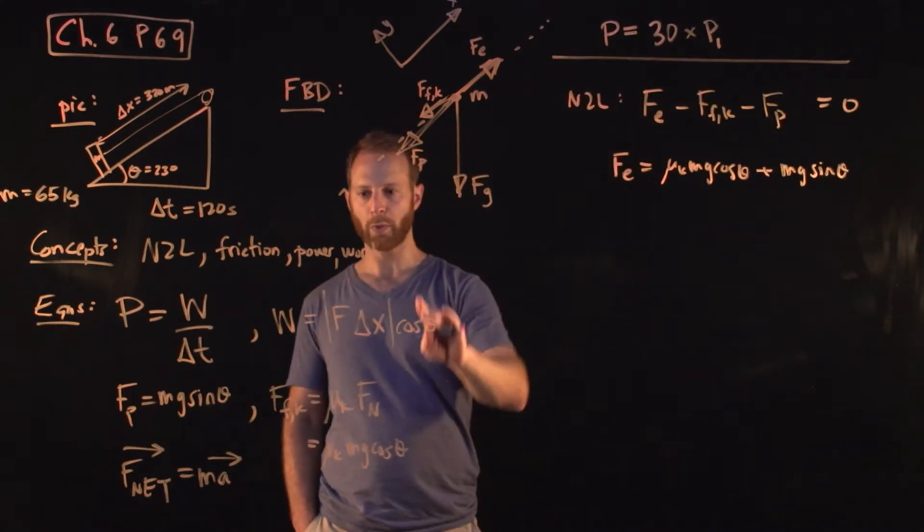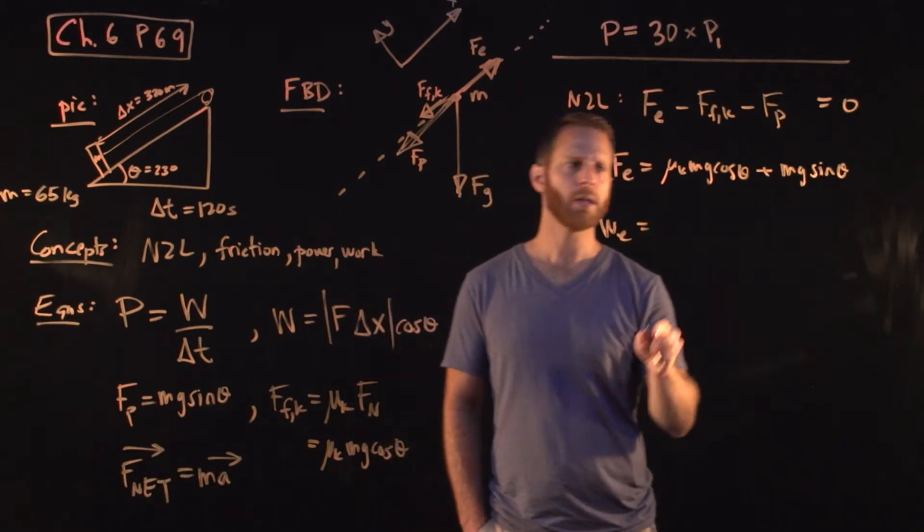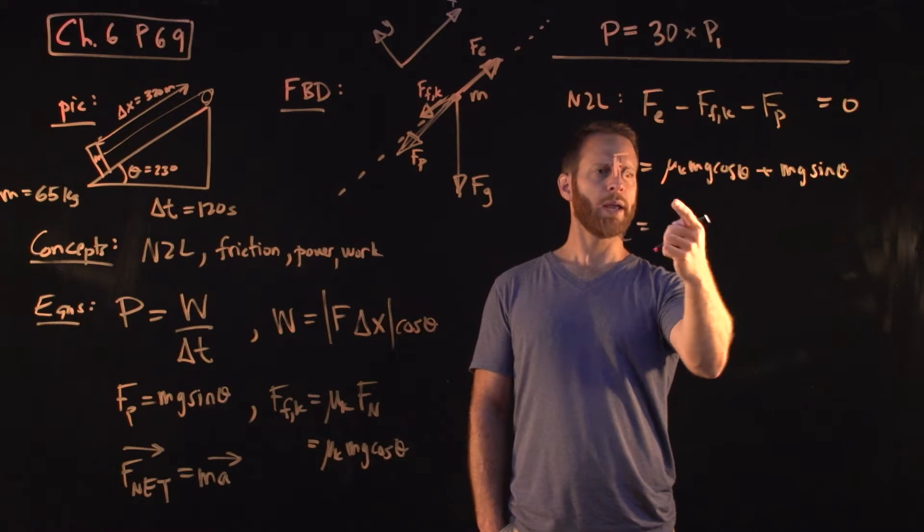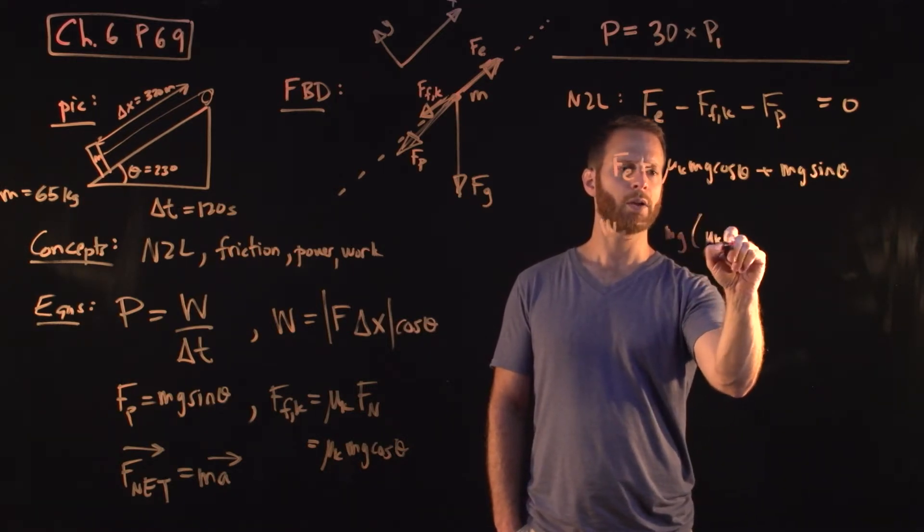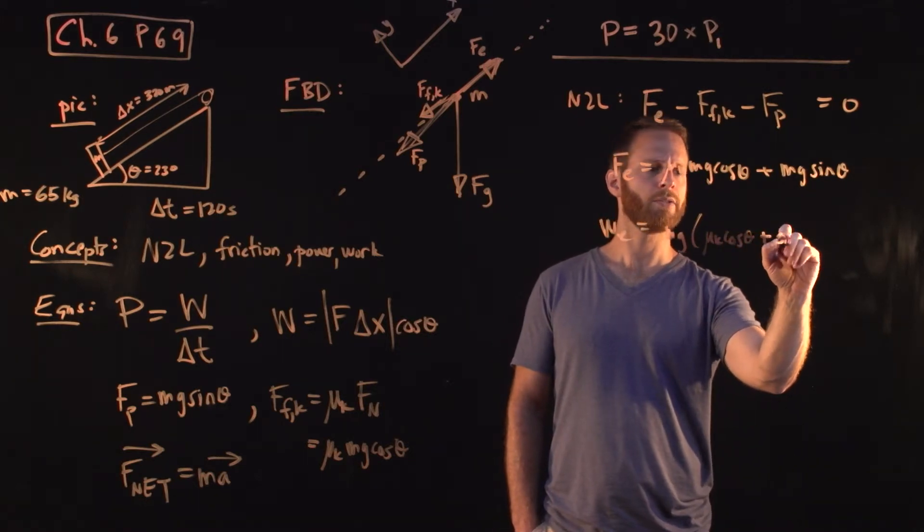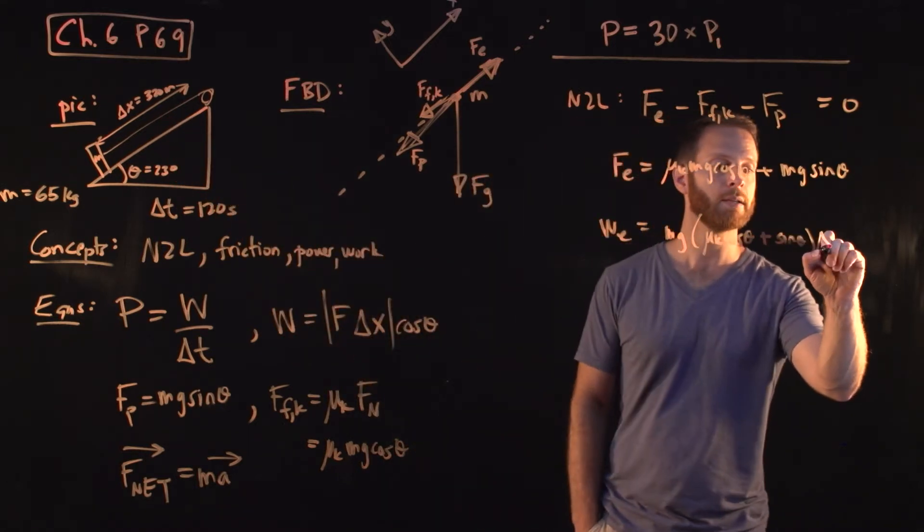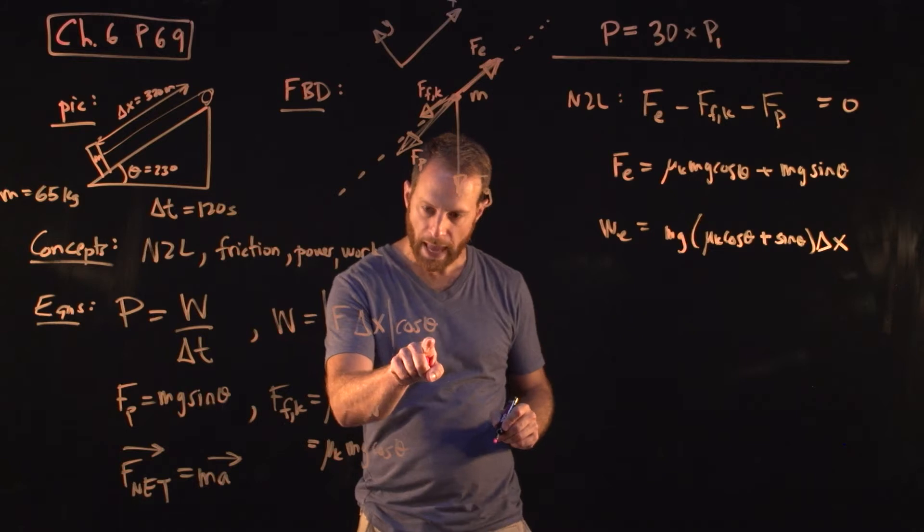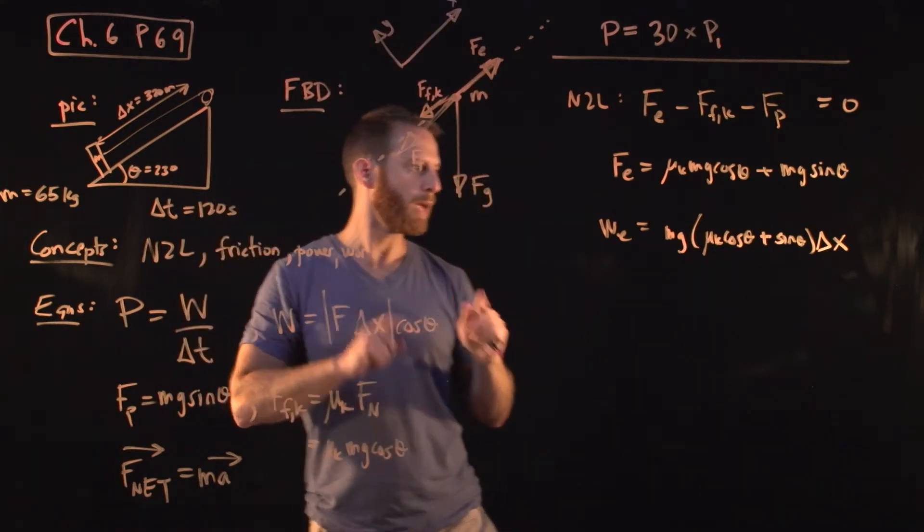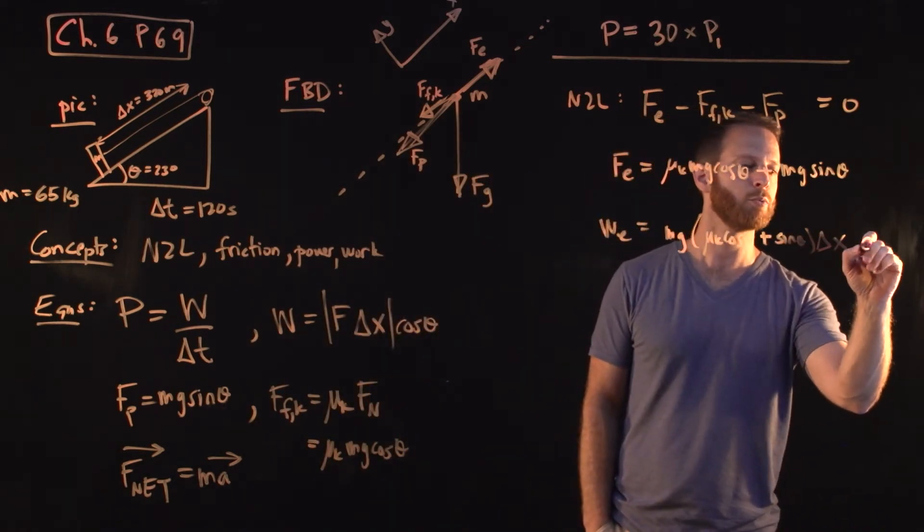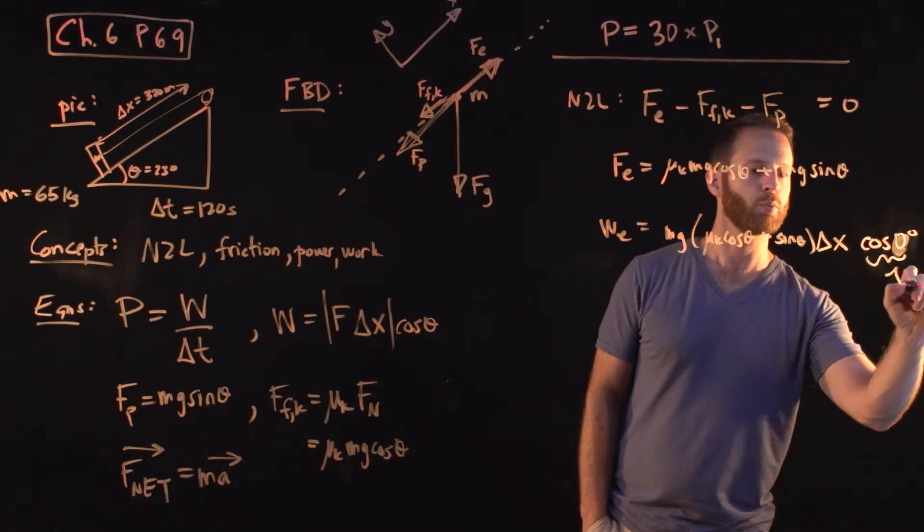So that's the force that we want, we want to get the work provided by the engine. Let's just go ahead and clean this up a bit, we'll write the work over here, mg, pulling that out, mu k cosine theta, plus sine theta. The displacement, I'll just write delta x, that's this number. Delta x, and the cosine of the angle, this is the angle between the force provided by the engine and the displacement, which are going the same direction, so we have cosine of zero, in other words, one. I'll just write that here, cosine of zero degrees, which is just one. So we've got the work, we're getting very close.